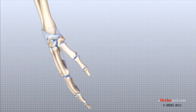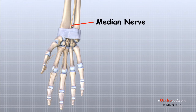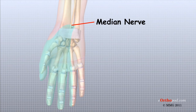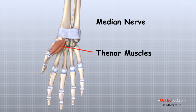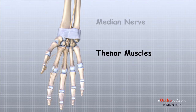The median nerve travels through a tunnel within the wrist called the carpal tunnel. This nerve gives sensation to the thumb, index finger, long finger, and half of the ring finger. It also sends a nerve branch to control the thenar muscles of the thumb. The thenar muscles help move the thumb and let you touch the pad of your thumb to the tips of each finger on the same hand, a motion called opposition.